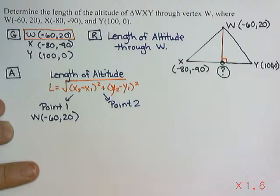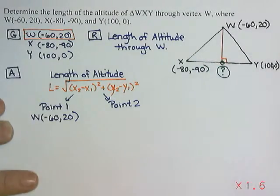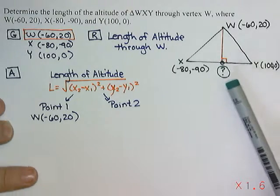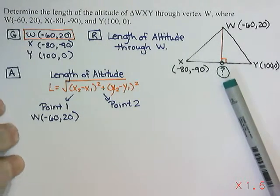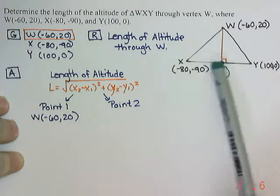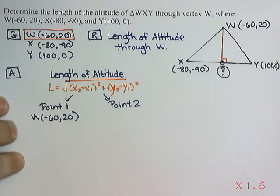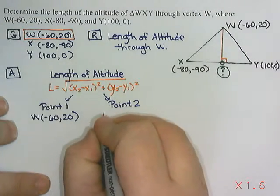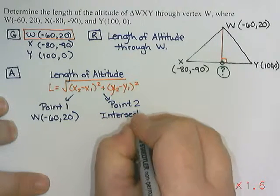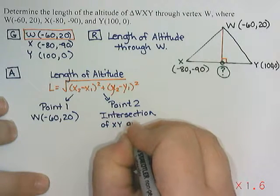And I need to know that point. Is that point the midpoint? Probably not. This point here is not. It didn't say it was a midpoint. Altitudes do not necessarily pass through the midpoint. So that means this is some other point that I don't really know how to find. I do know that it is where XY and the altitude intersect. So it is the point of intersection of XY and my altitude.